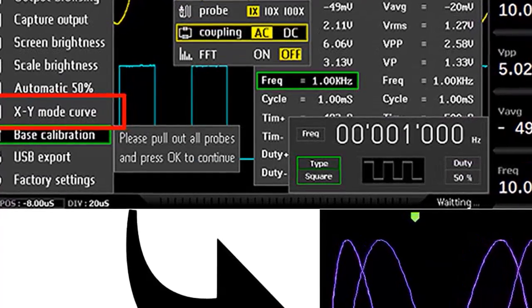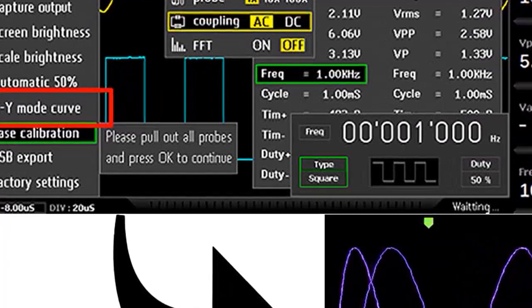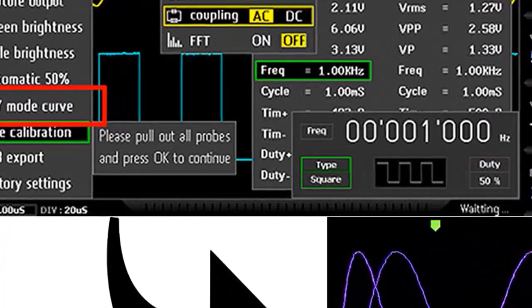So don't wait any longer and order your own ADDS-1014D 2 in 1 digital oscilloscope DDS signal generator today.